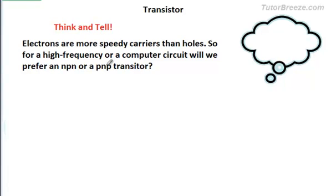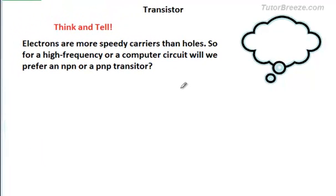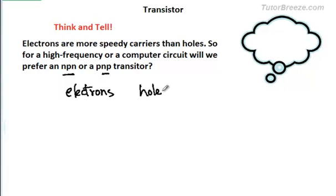Now consider this: electrons are faster carriers than holes. So for a high-frequency or computer circuit where you need a very quick response, would we prefer an NPN or a PNP transistor? The answer is an NPN transistor. In an NPN transistor, electrons are the majority charge carriers, whereas in a PNP transistor, holes are the majority charge carriers. So for a very short response time, we prefer an NPN transistor.